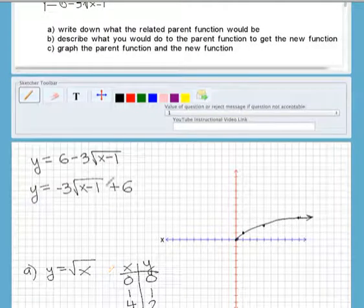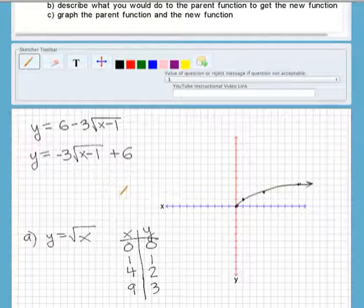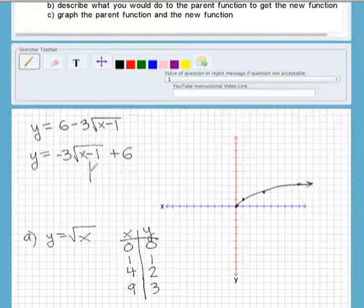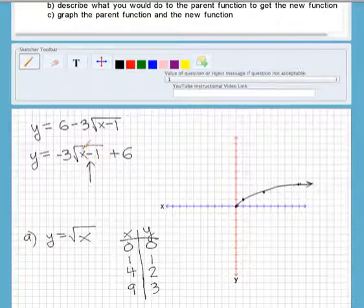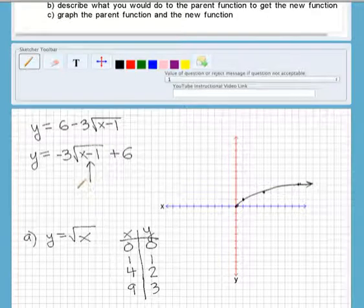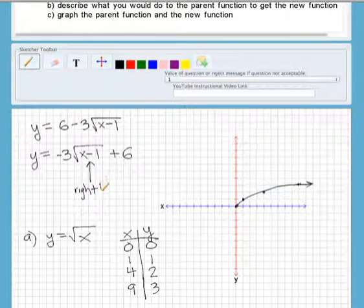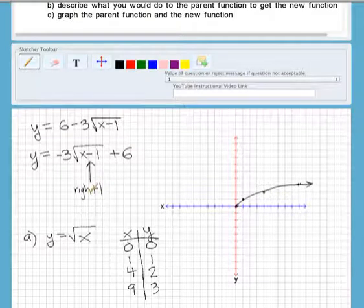Part B, describe what you would do to the parent function to get the new function. Okay, so here's where it gets a little tricky. We're looking at this minus 1. X is lie. I always tell my students X is lie. So this is actually going to shift the graph right 1. That's the first change that's going to happen.